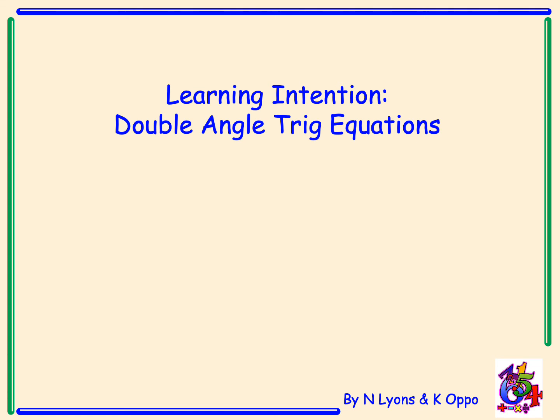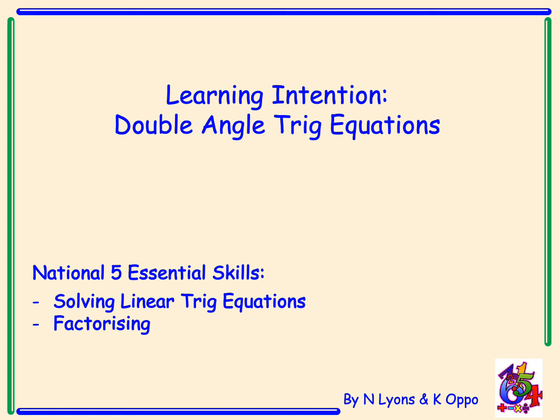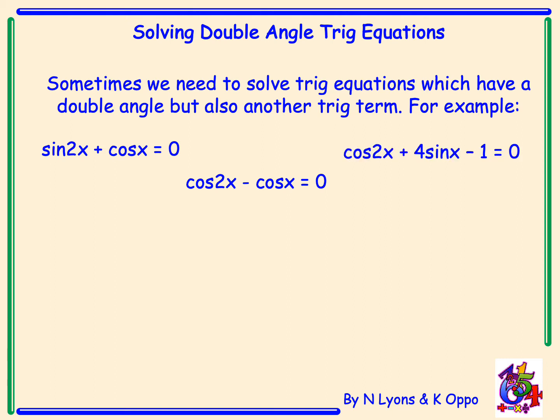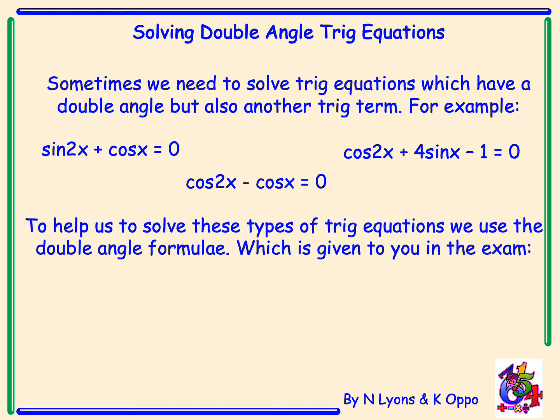Today we are going to look at solving double angle trig equations. The National Five essential skills are solving linear trig equations and factorizing. Sometimes we need to solve trig equations which have a double angle but also another trig term — for example, sin2x + cosx = 0, cos2x - cosx = 0, and cos2x + 4sinx - 1 = 0. Here you can see we have a double angle 2x but also a single angle of x.